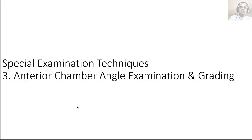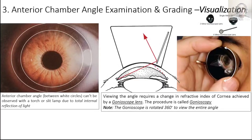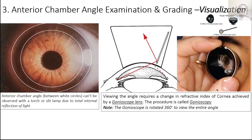Now we'll talk about grading and assessment of the anterior chamber angle — gonioscopy. We need gonioscopy to view the angle because of the phenomenon of total internal reflection. We use a special lens called a gonioscope to view the angle. This is a gonioscope on an eye during gonioscopy, and because the angle structures are 360 degrees, we can simply rotate the gonioscope to see all of the angle.